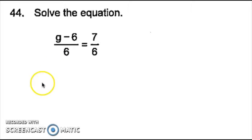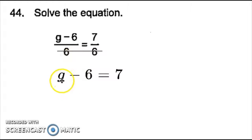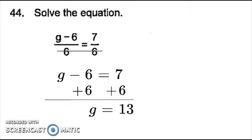Number 44, I notice that once again I have two fractions set equal to each other where the denominators are the same. So I can simply notice that the denominators could be crossed out. That will give me just g minus 6 equals 7. Since g is being subtracted from 6, I can do the opposite by adding 6, and I'll get g equals 13. So my answer for number 44 is going to be 13.